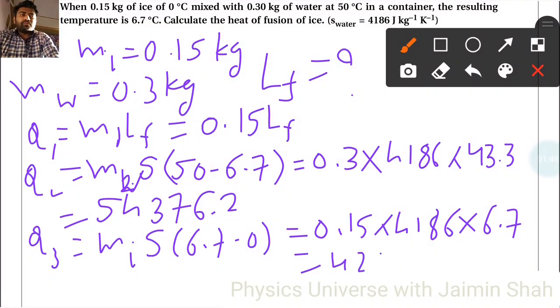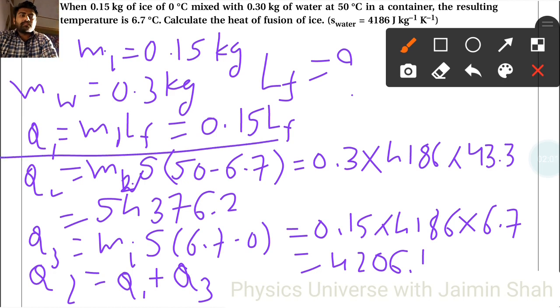Now our equation becomes q2 equals q1 plus q3. So see, this is q1, this is q2, and this is q3.